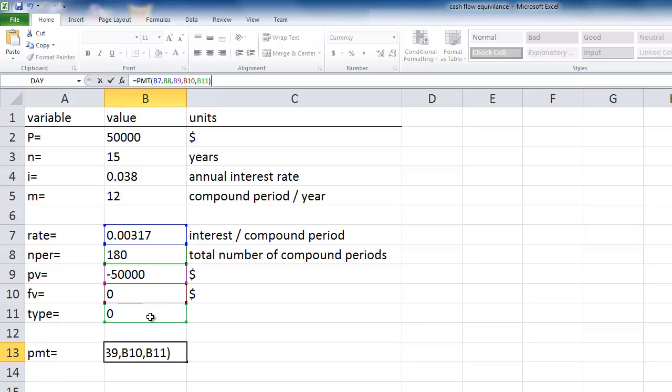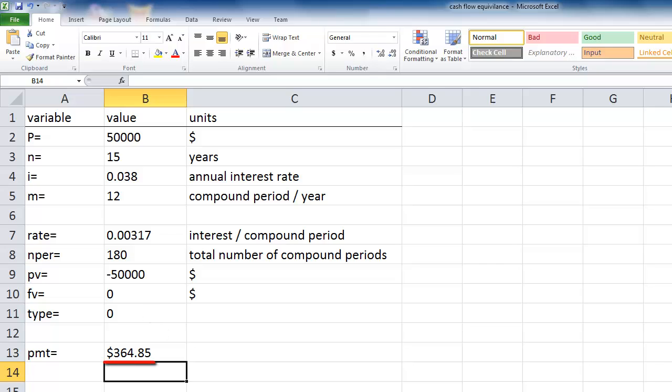Constant monthly payments of $364.85 for 15 years will repay this $50,000 loan. Now, we can redo this problem for a 30-year loan and compare the monthly payments.